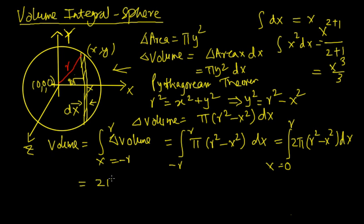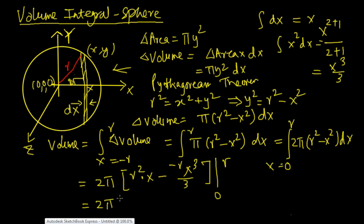2 pi times [r squared x minus x cubed by 3] evaluated from 0 to r. The term at 0 will become 0 so we can ignore that. So simplifying this equation we see the sphere